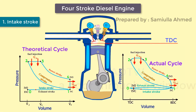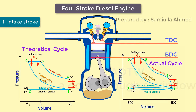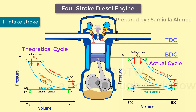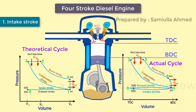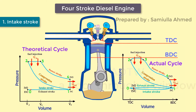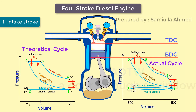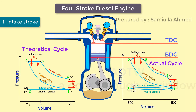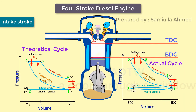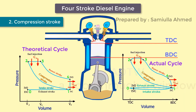In the intake stroke, the piston moves from top dead center to bottom dead center, and the cycle passes from point zero to one. The intake valve is open and the exhaust valve is closed, while the piston pulls air into the cylinder by producing a vacuum through its downward motion.